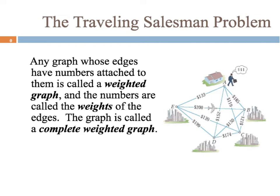Any graph whose edges have numbers attached to them is called a weighted graph, and the numbers are called the weights of the edges. If it's a complete graph and it has weights on every edge, then we call it a complete weighted graph. Notice the diagram on the right: we have our salesman at home at Vertex A, with all the cities and edges, and all edges have weights representing the monetary cost to get from one city to another.